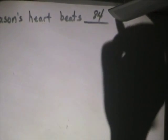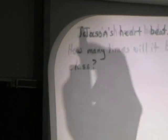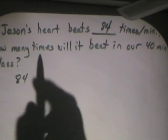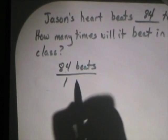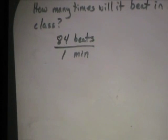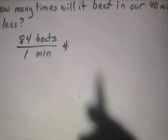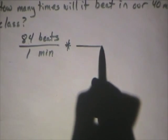So, Jason's heart beats eighty-four times per minute. How many times will it beat in our forty-minute math class? Let's write down what we know. It's beating eighty-four. We've got eighty-four beats per one minute. So, that's our control rate. That's happening with this young man over and over again. Now, we want to be left with beats and we want the minutes to cancel. So, I need to know, what do I multiply by here?